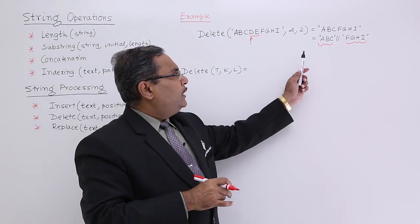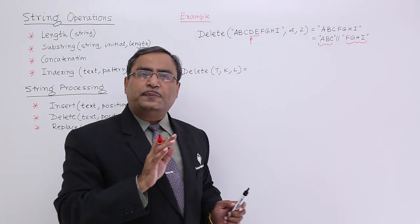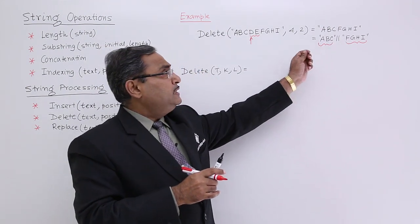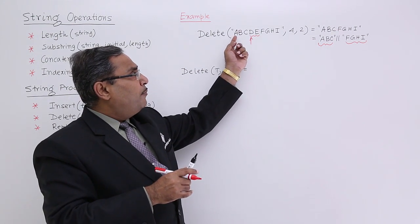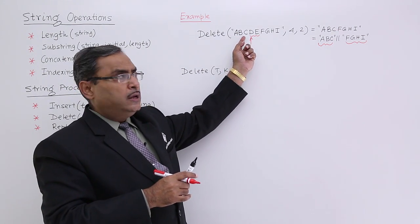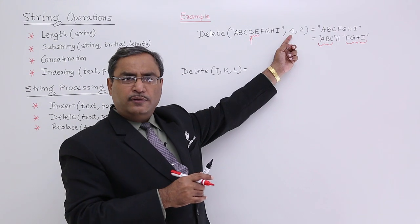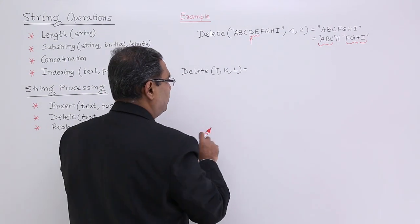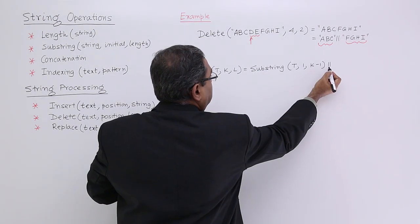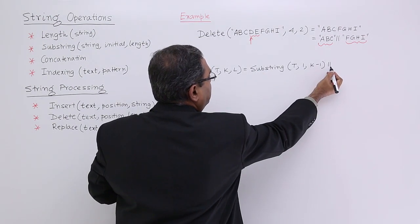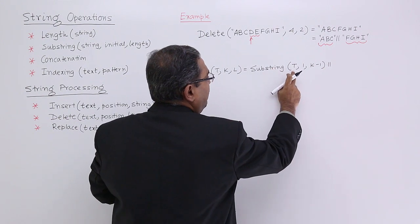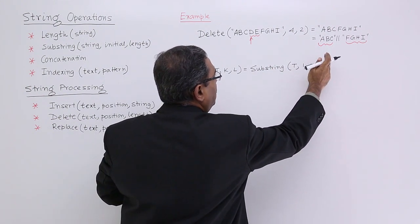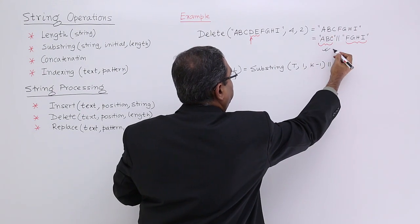I should do the concatenation of two substrings. What is the first substring? That is ABC. That means from the very first place, how many characters? Three. How to get 3 from 4? That is 4 minus 1, very simple. We have written this substring t from the very first place, k minus 1 number of characters are to be picked up. This ABC has been picked up.